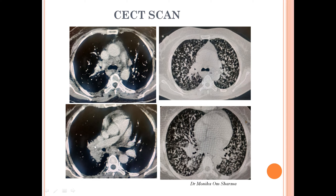We can also see increased density in the right perihilar region just abutting the main pulmonary artery — this was a right perihilar consolidation. There was no pleural effusion even on CECT chest. On the lung window, we can see multiple nodules of size two to three millimeters uniformly and randomly distributed, and again that density in the right perihilar region is seen here as well.